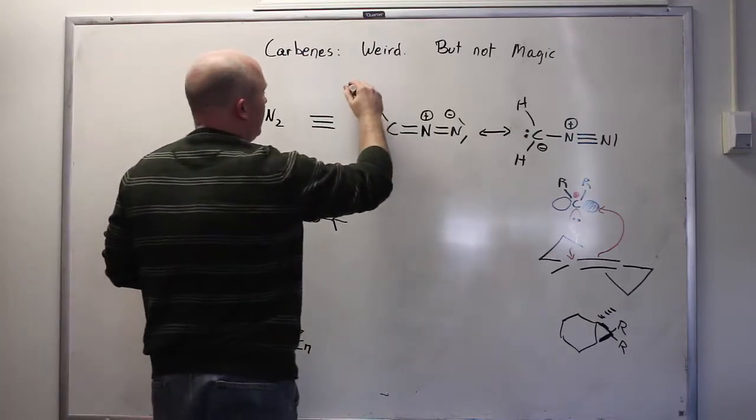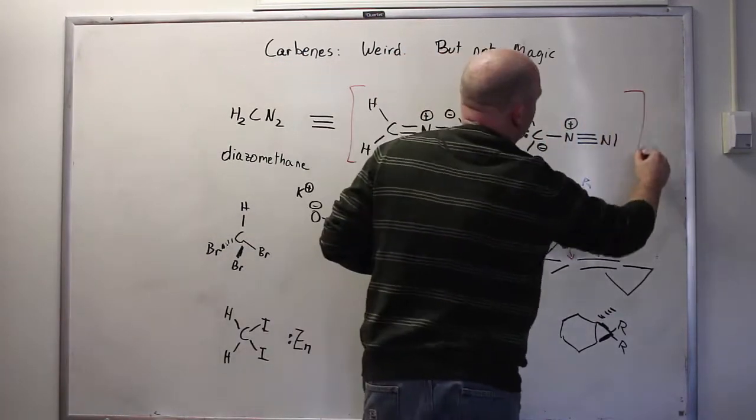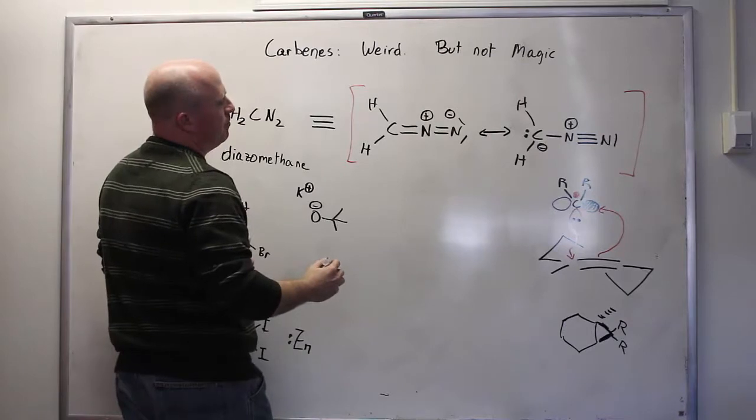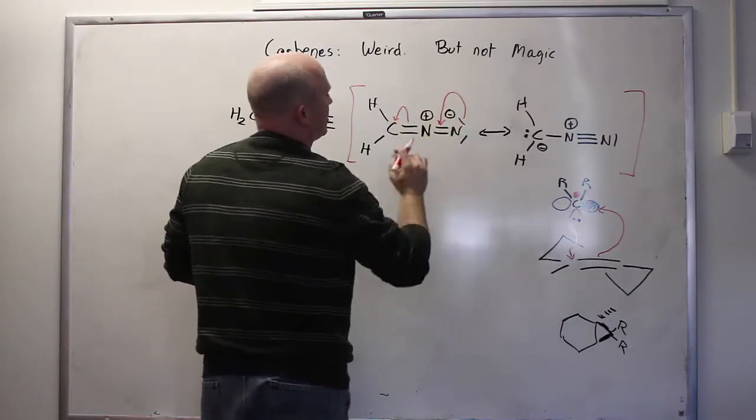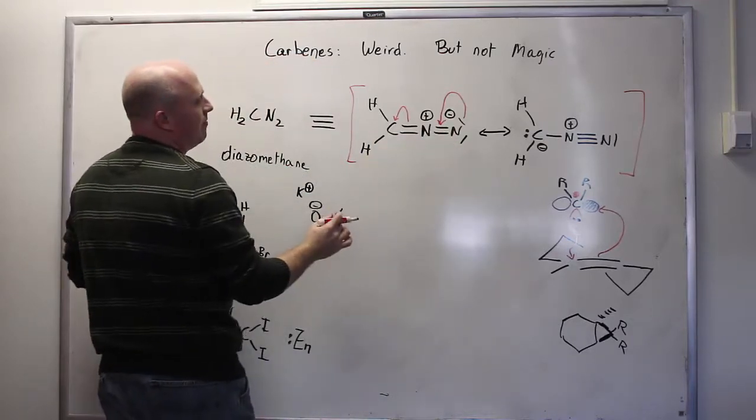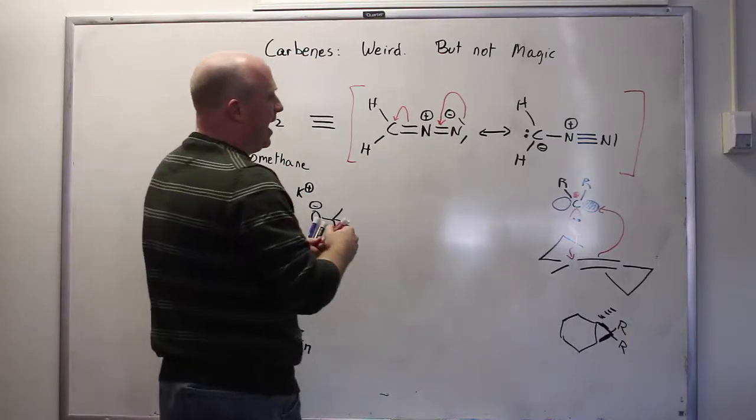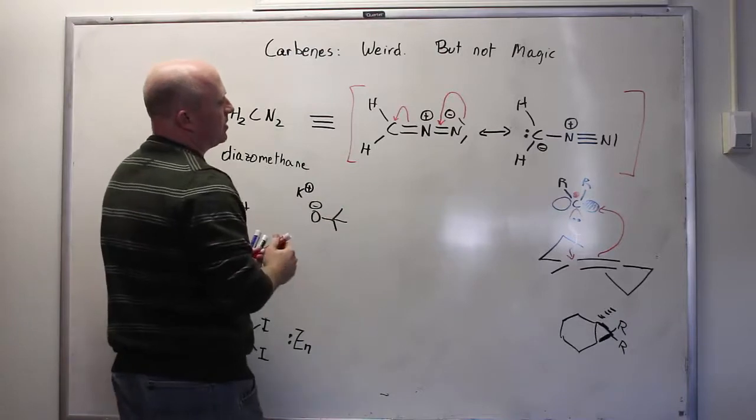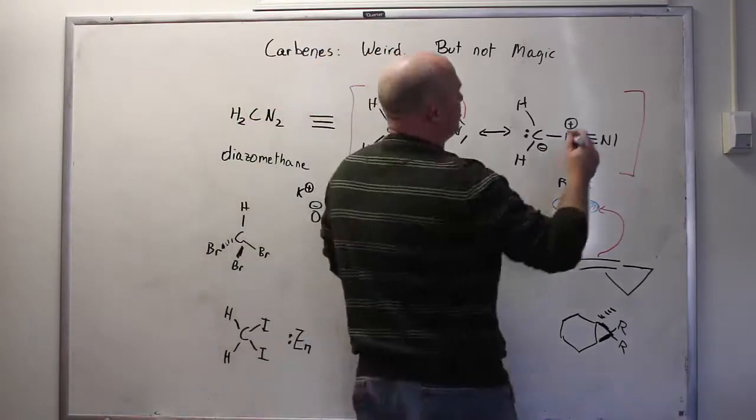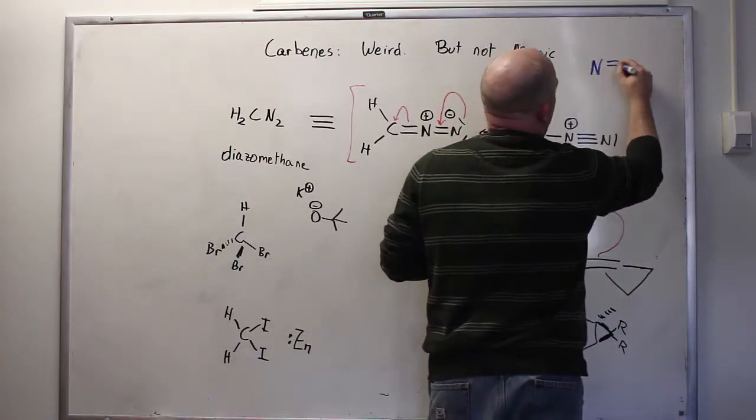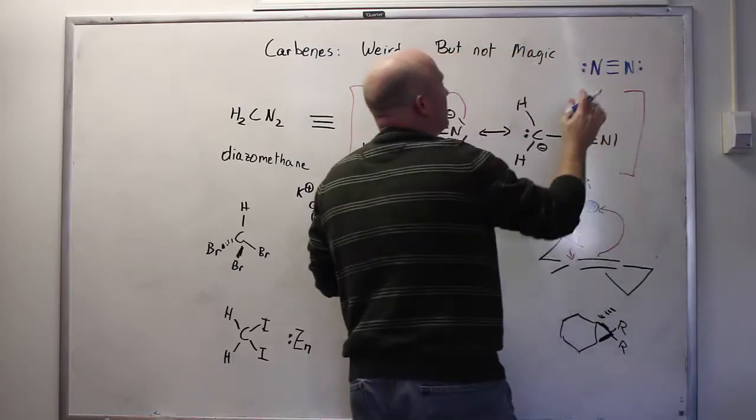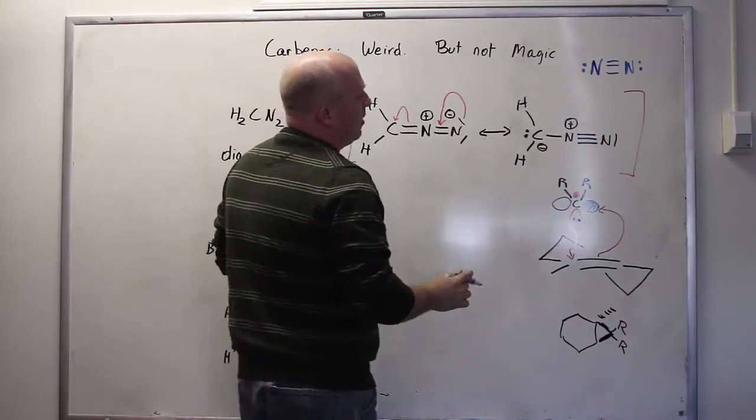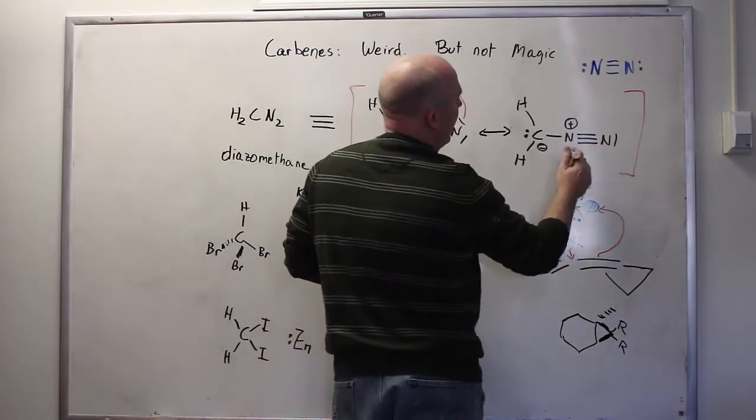So obviously there's going to be a resonance structure associated with this. And if you simply push electrons this way, the nitrogen then can push electrons to make a triple bond so that you have what looks a lot like nitrogen gas in the middle here, and that pushes electron density onto the carbon. Nitrogen gas, of course, is a triple bond between two nitrogens, a pair of electrons on each nitrogen. So you may recognize already that that's really what you have here.